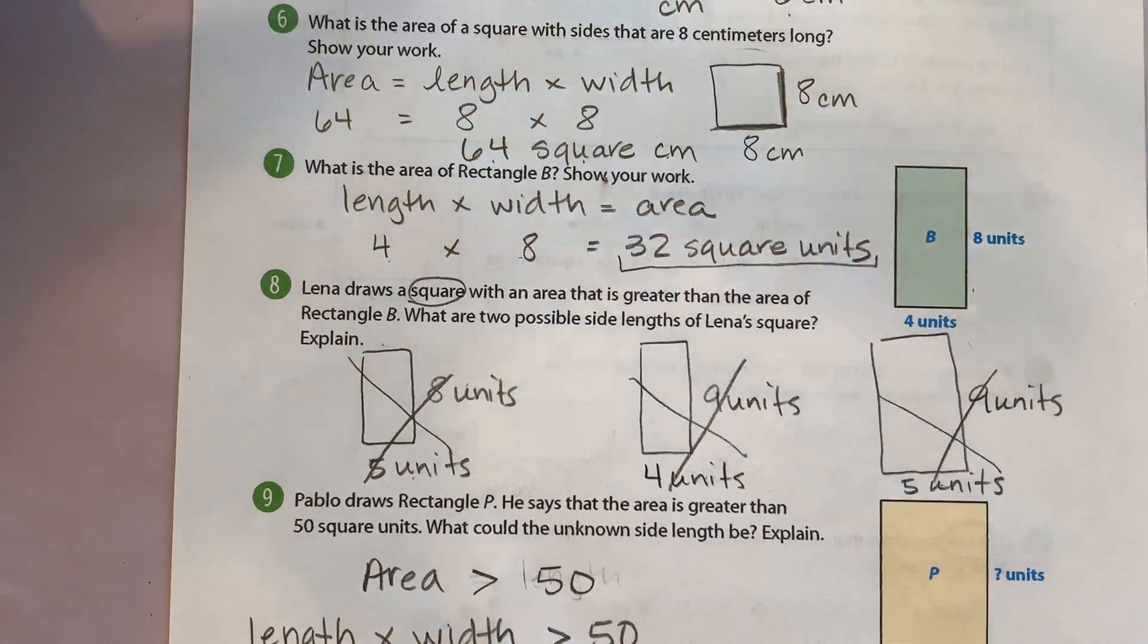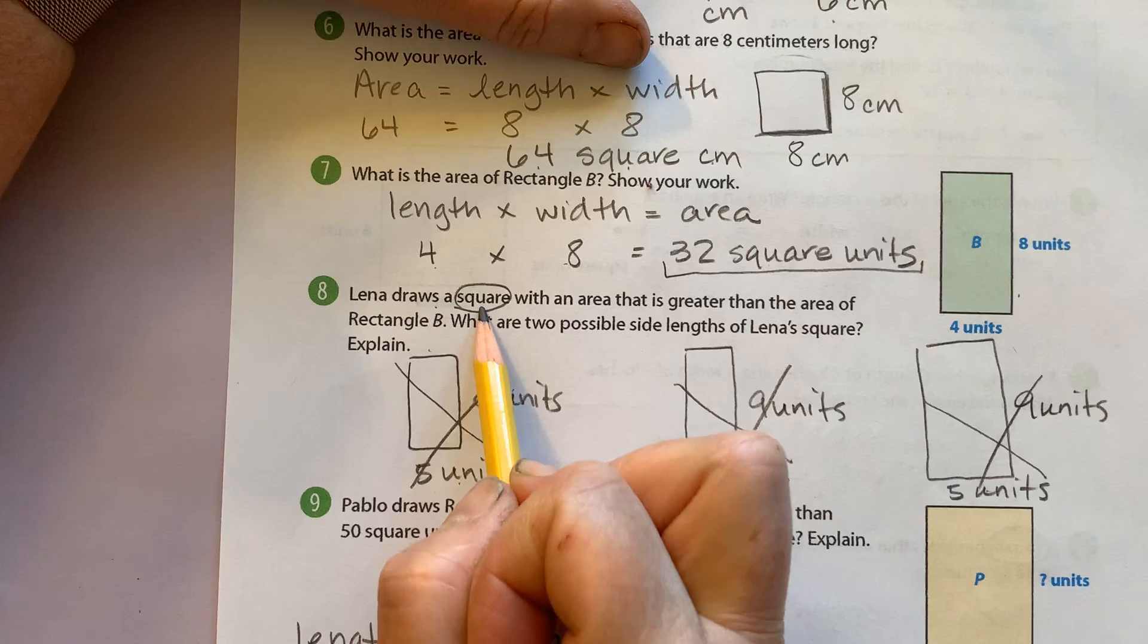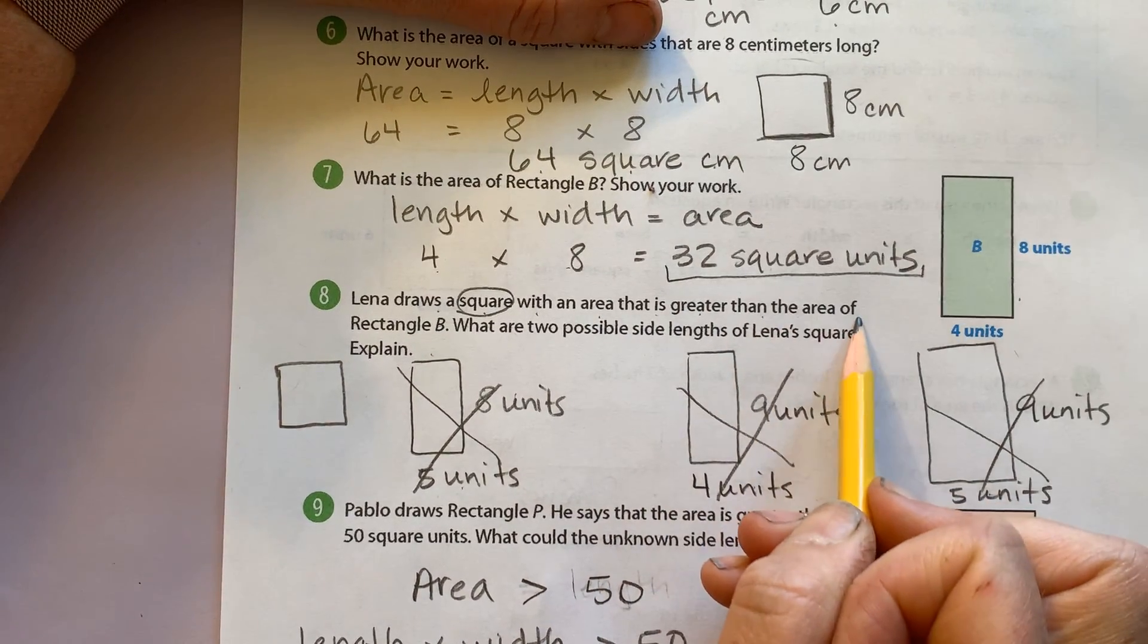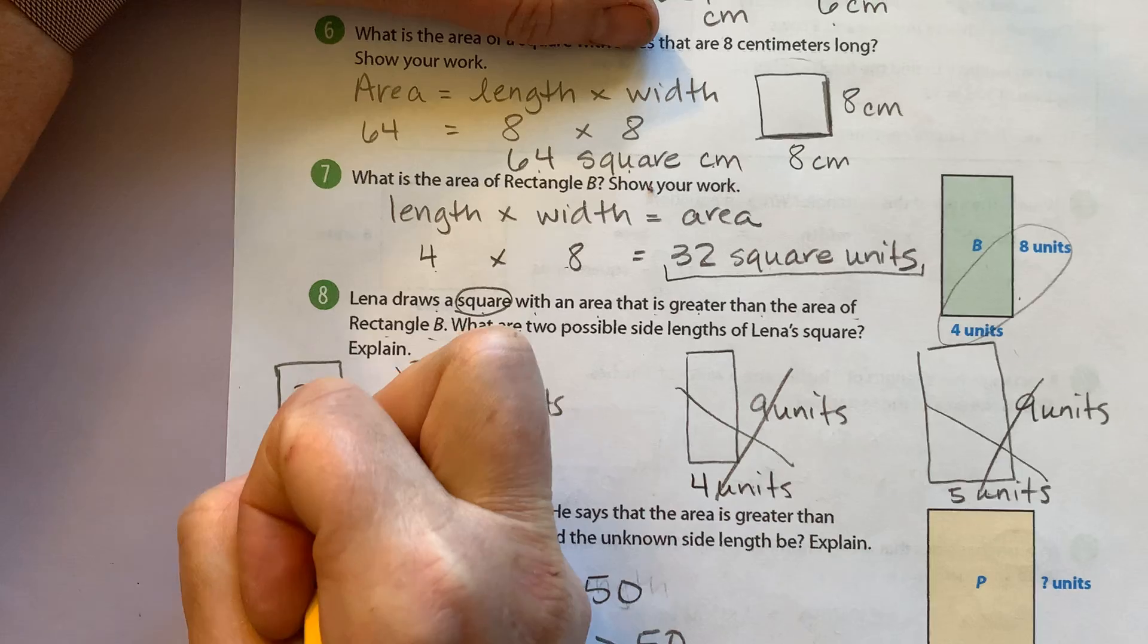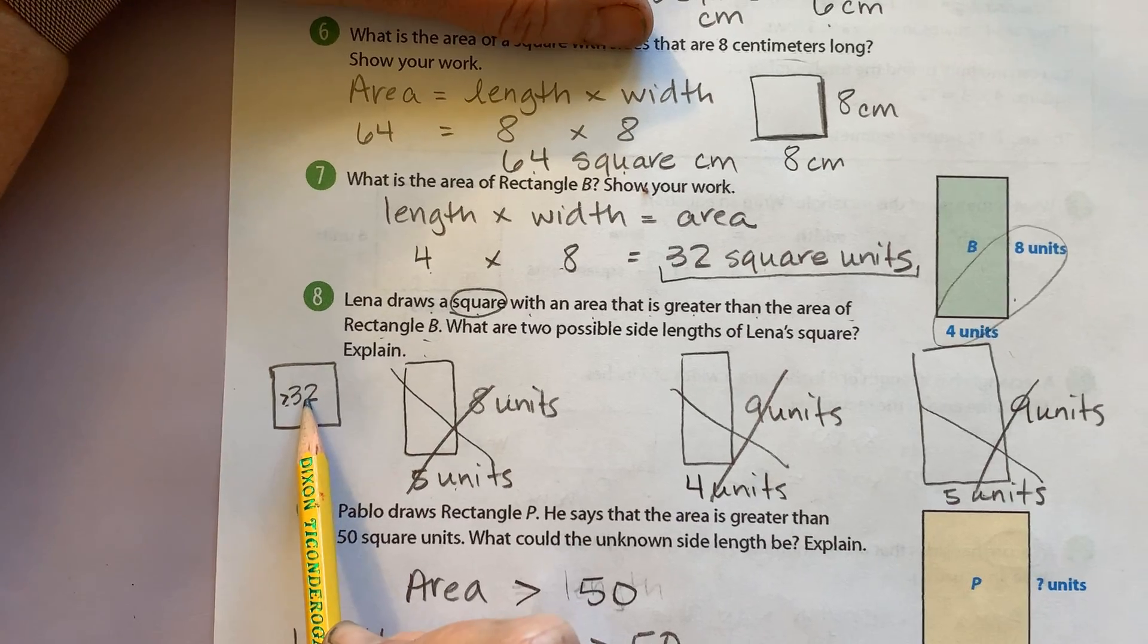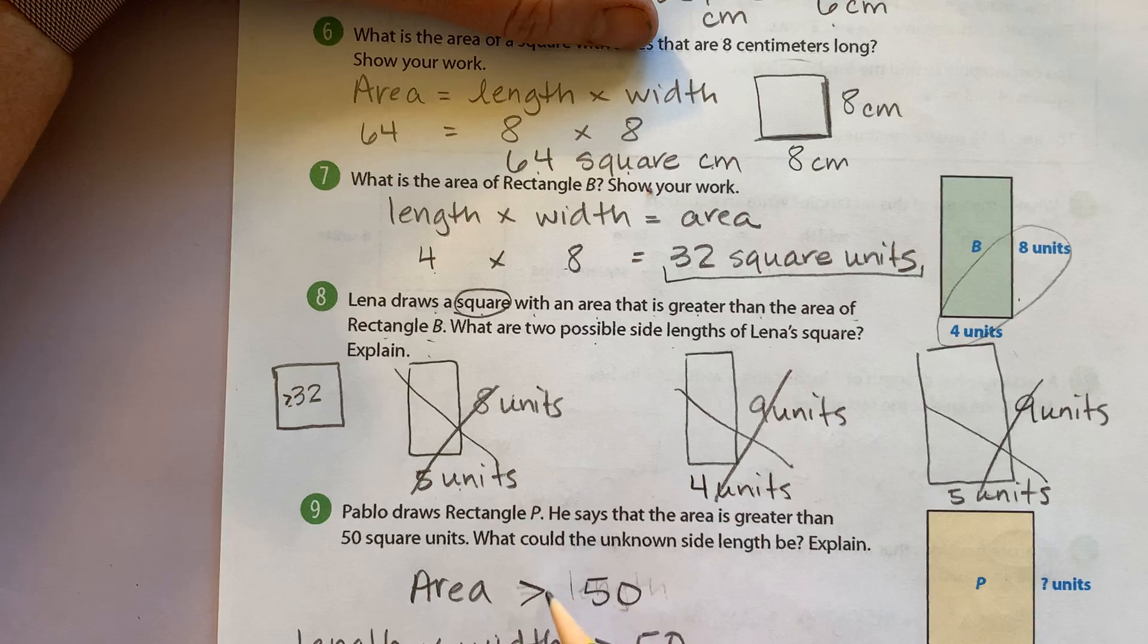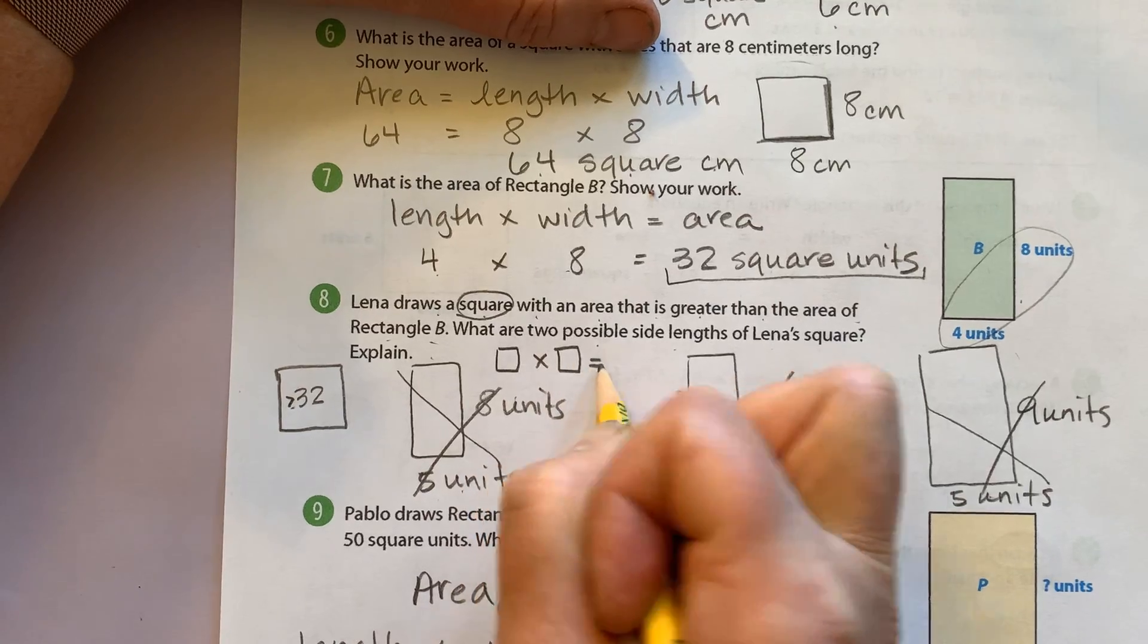Hopefully you got the right answer. I wish we were in class and you could tell me how to do this one right. Okay, Lena draws a square. So I'm going to slow down and I'm going to draw a square with an area that is greater than the area of rectangle B. What was the area of rectangle B? That's right, 32. So this area is larger than 32, right? So I'm going to do a greater than. It is greater than 32. What are two possible side lengths of Lena's square?